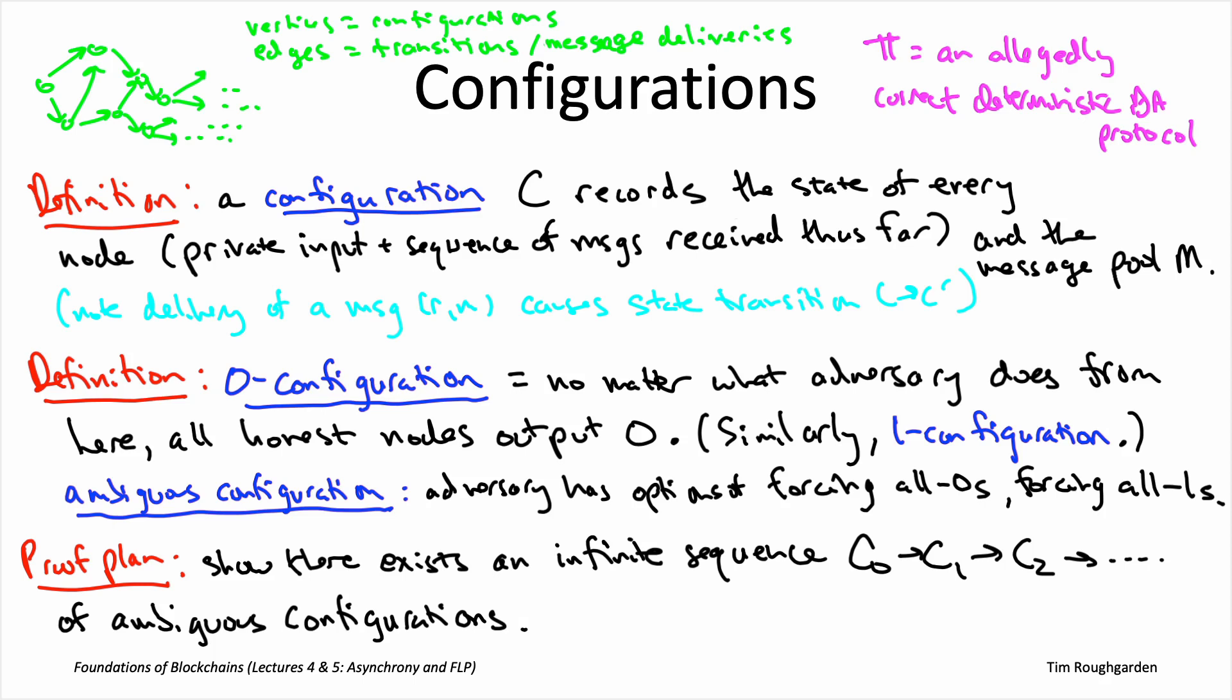Notice that a configuration may be ambiguous for one protocol π, but not ambiguous for a different protocol π prime. So we're going to have to exhibit a different sequence depending on the protocol. But you give me the protocol π, and I will show you an infinite sequence of ambiguous configurations. In other words, I'm going to demonstrate to you that this protocol might run forever. So, in fact, it doesn't satisfy termination after all.